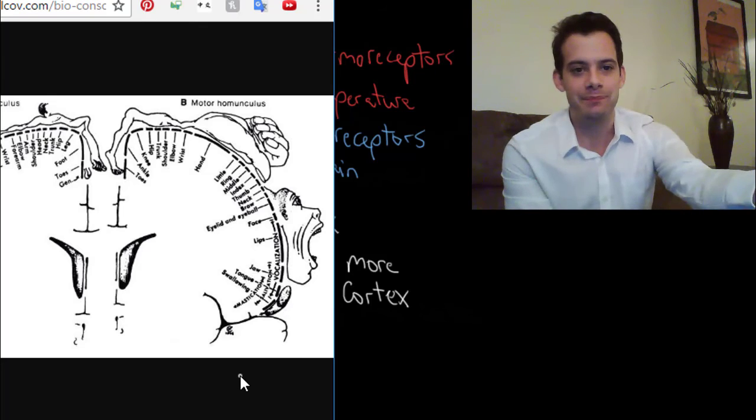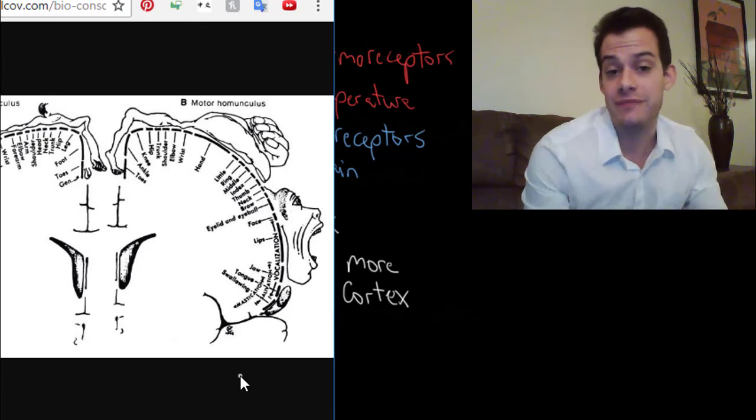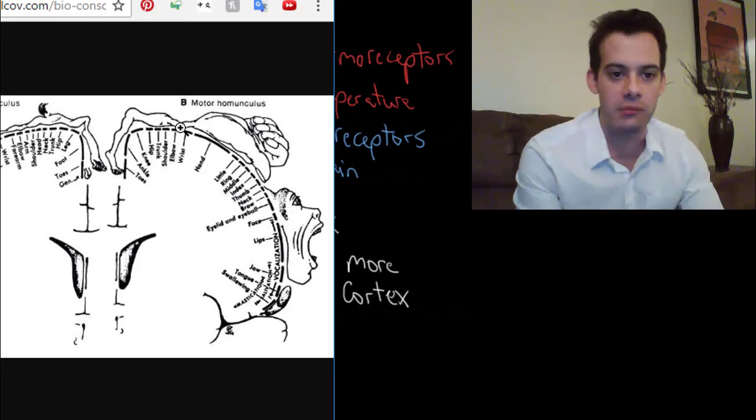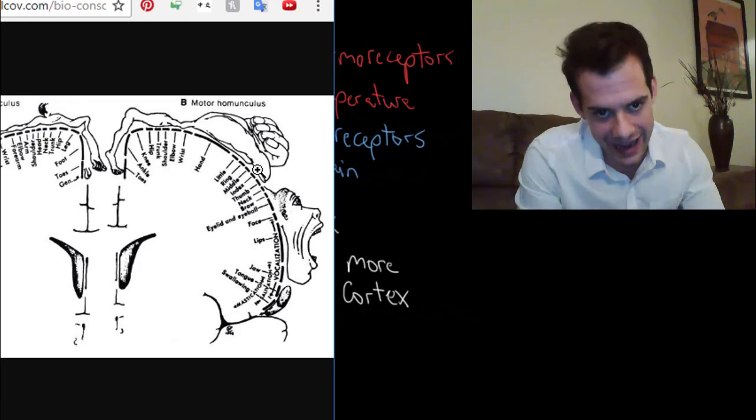So that's not going to require very much brain space and you can see that here, the elbow, one little part of the brain there for controlling that movement. Whereas the hands are huge.